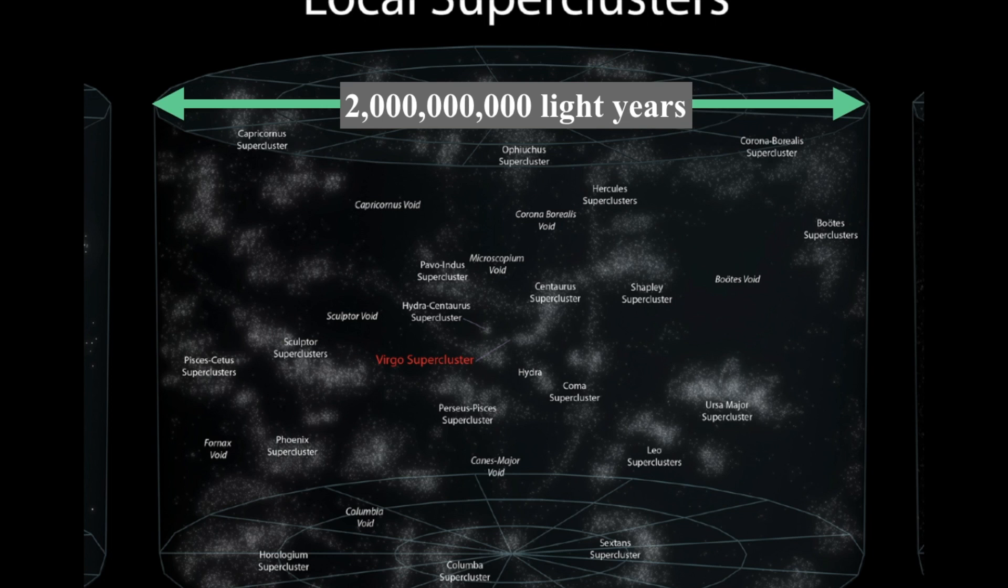But notice what we're seeing now is it starts to look kind of cloudy. The superclusters themselves group into filaments and sheets and lines. And those filament sheets, lines, and nodes kind of form the edges of a foamy-like structure, which are tendrils connecting together.